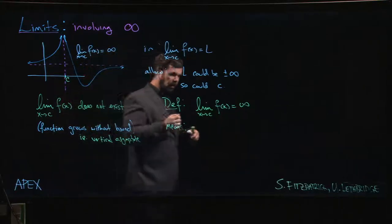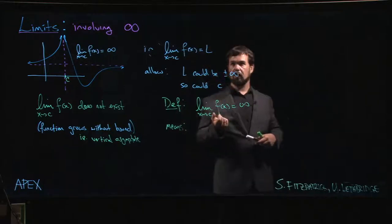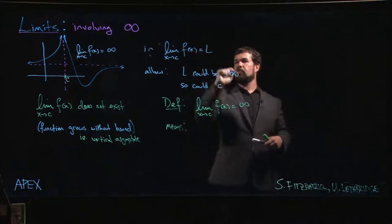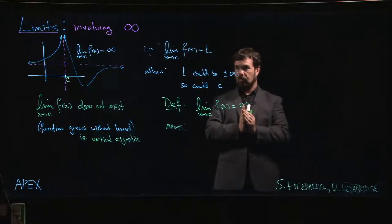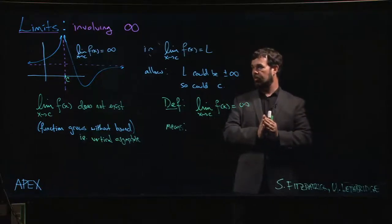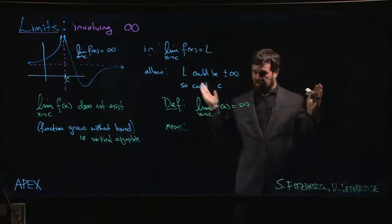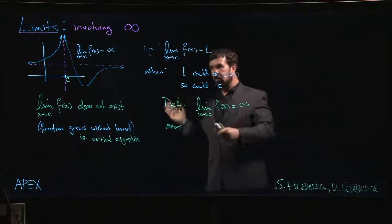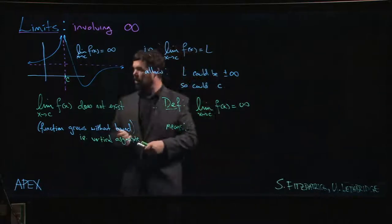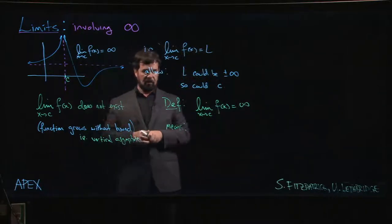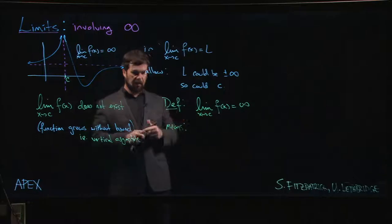When we thought about the regular limit, we want to make the difference between f of x and l arbitrarily small. We wanted them to be close, and the way we did that is we said give me this epsilon, give me this number, make it as small as you want. I'm going to make this difference smaller. Here we want to say that f of x is getting big, so we say give me some number, make it as big as you want.